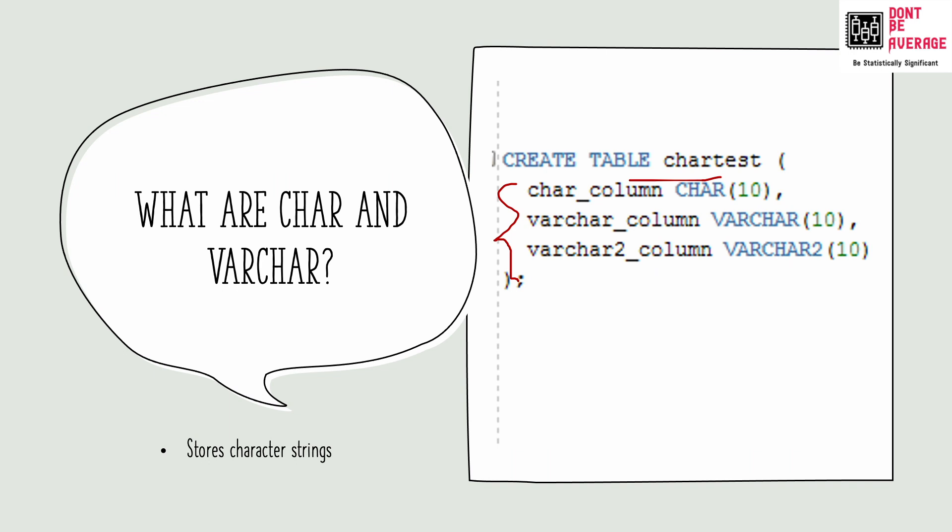we are creating a table called char test with three columns. The first column defined as a char column, this one. The second and third are defined as varchar. You may have already understood that char and varchar are two data types for character strings, but they work a bit differently. Let's see what the differences are.